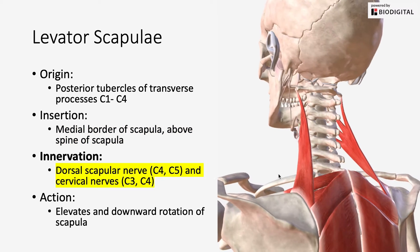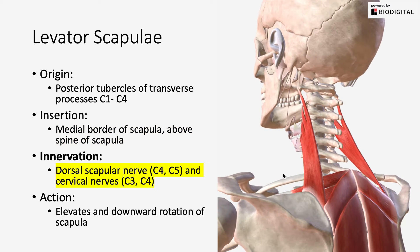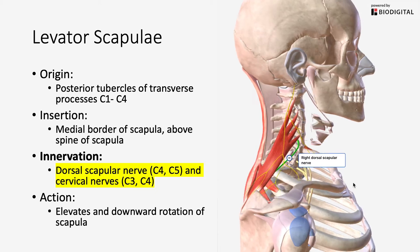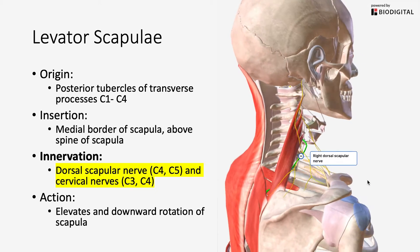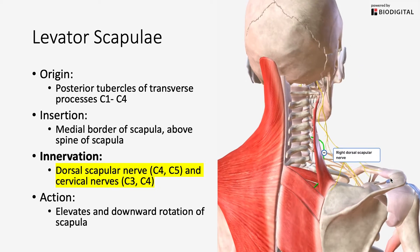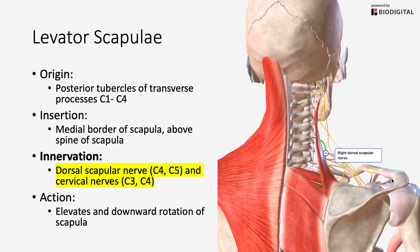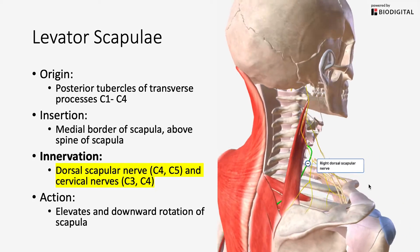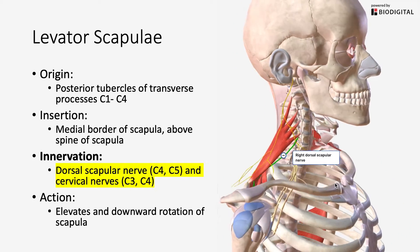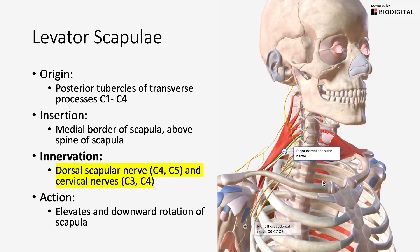It's going to be innervated by your dorsal scapular nerve, coming off of primarily — textbooks will say C5, but some will say C4 and C5 — and it also has some innervation from cervical nerves C3 and C4.